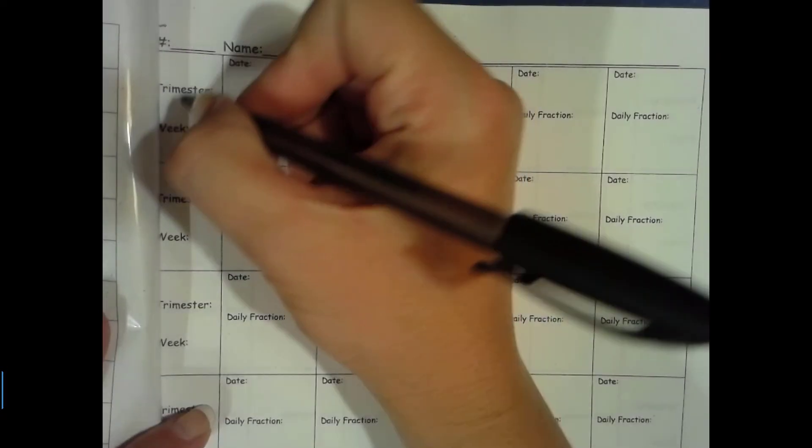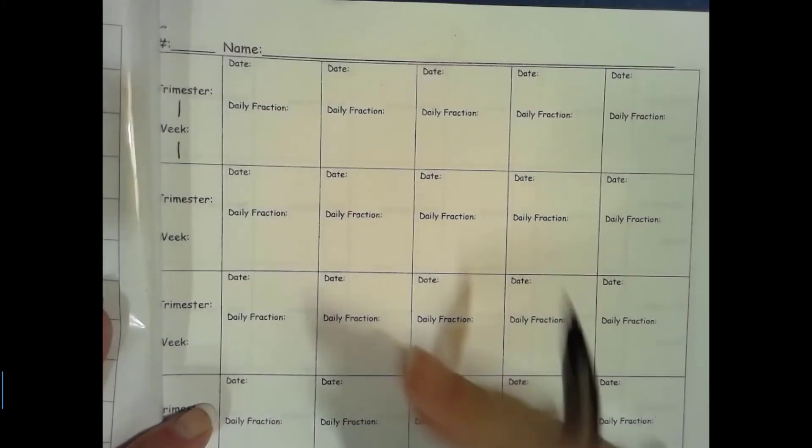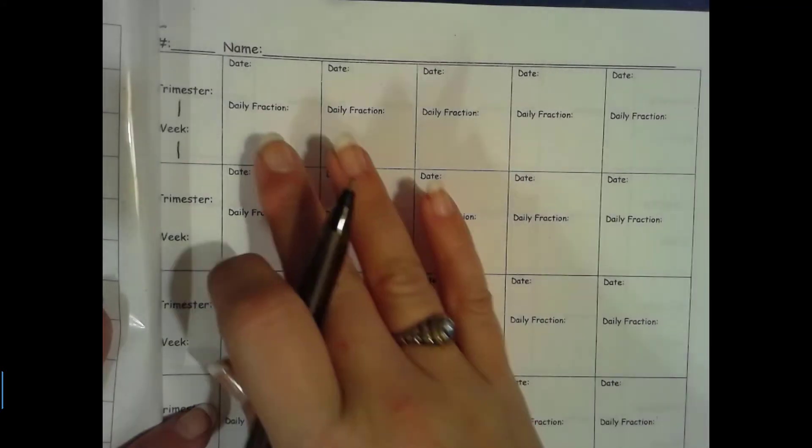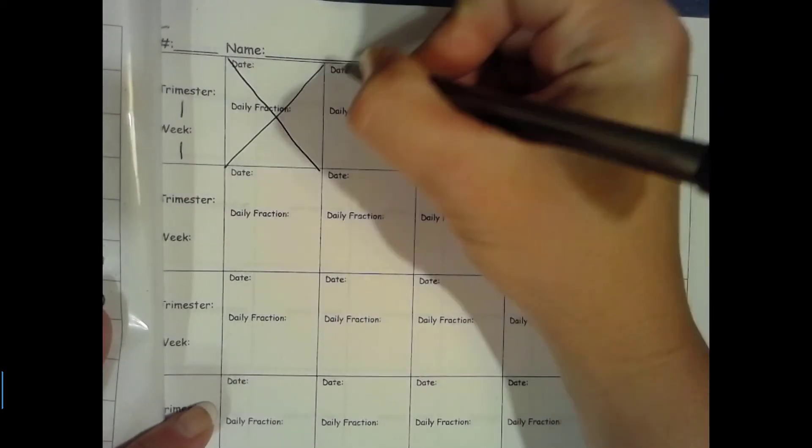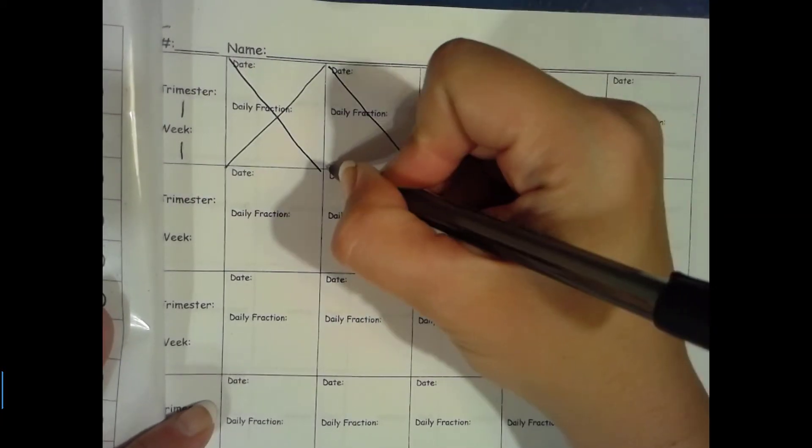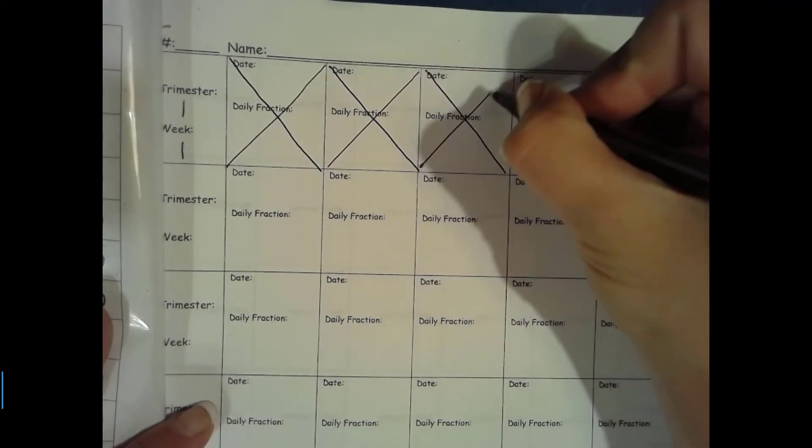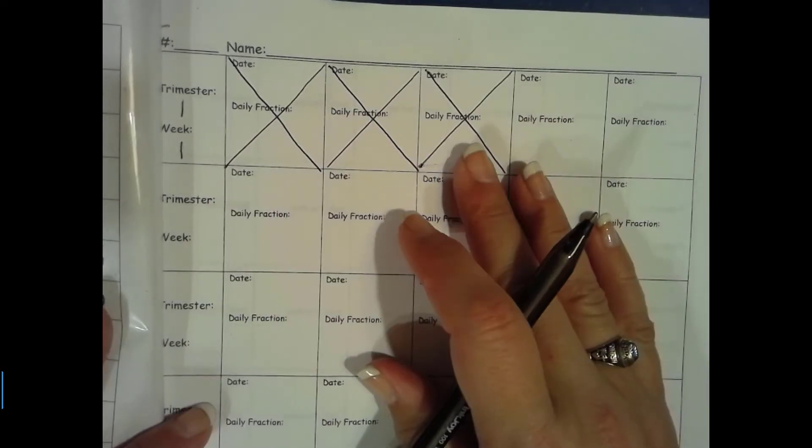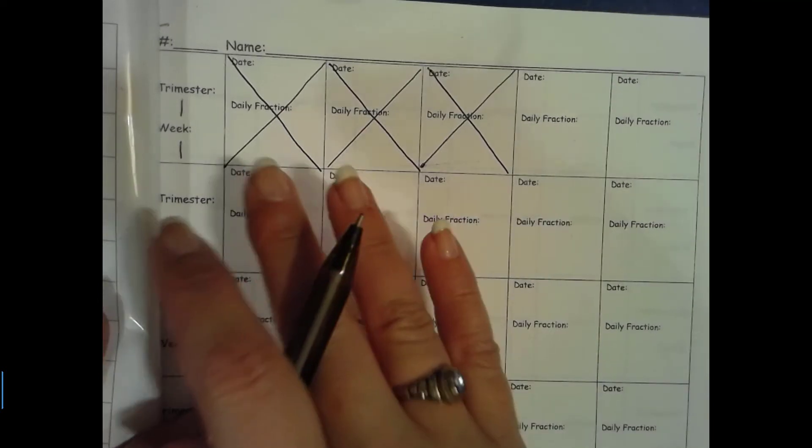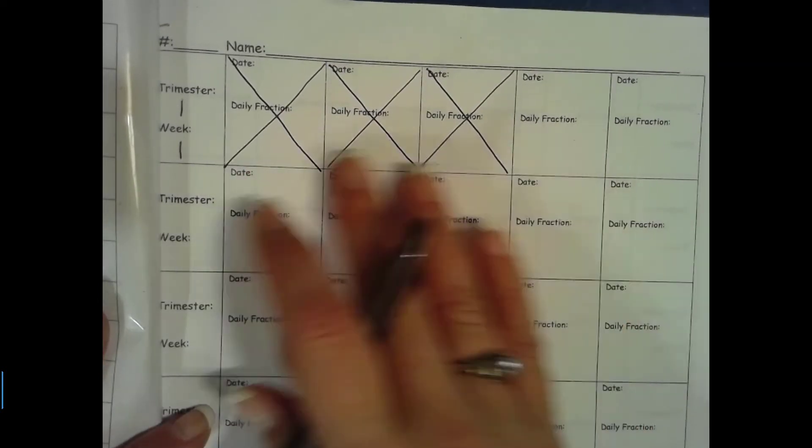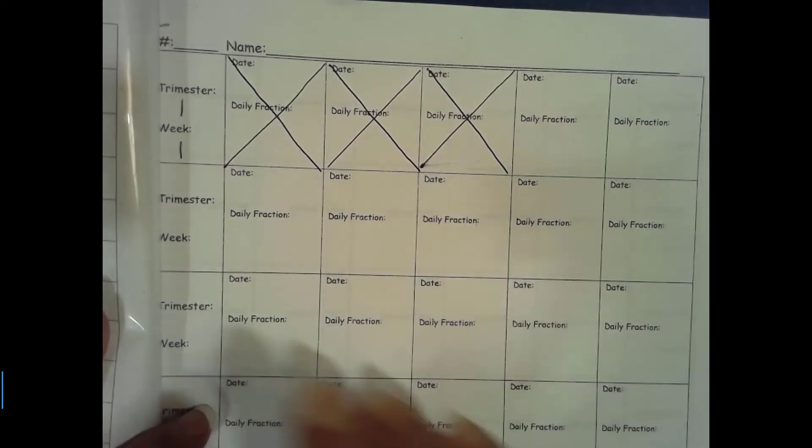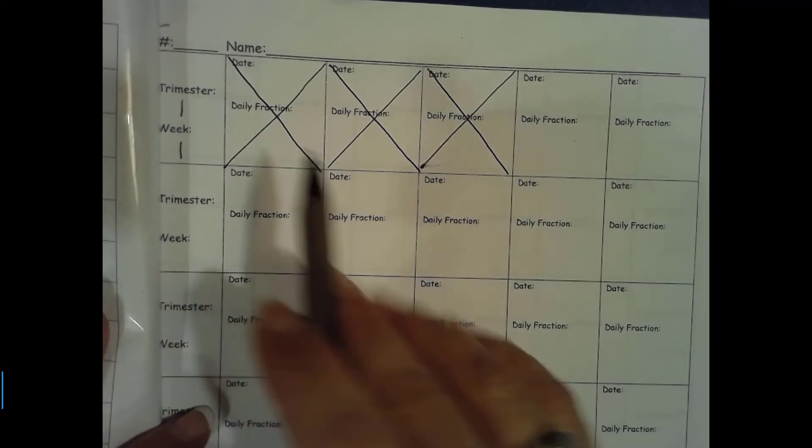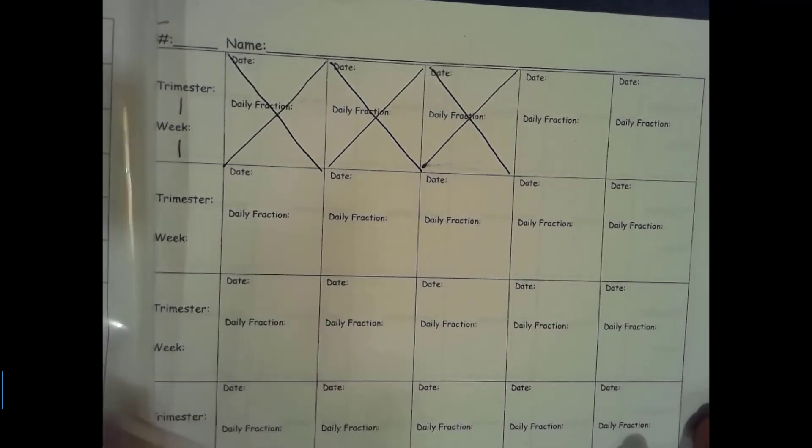And then every day we fill this in to keep track of our fraction for the day. So we are in trimester 1 and we are in week 1. This represents Monday through Friday. We did not have school on Monday, Tuesday, or Wednesday. The only time we X out any boxes is when you are missing a day or 2 or 3 within a week. We do not cross out a whole week.